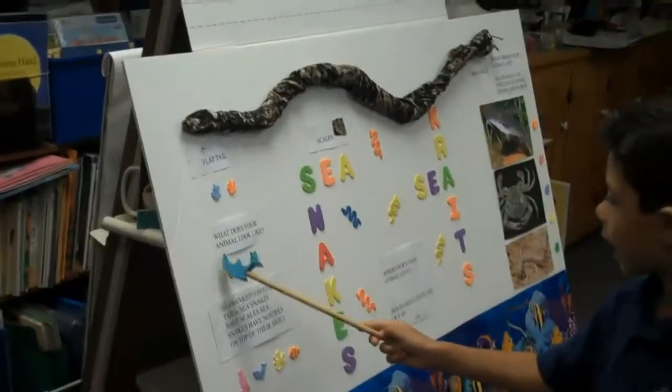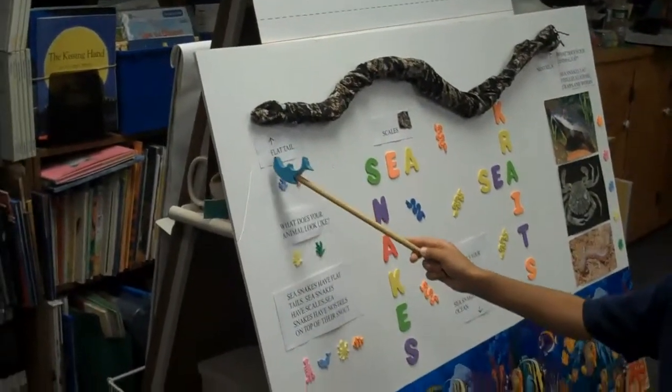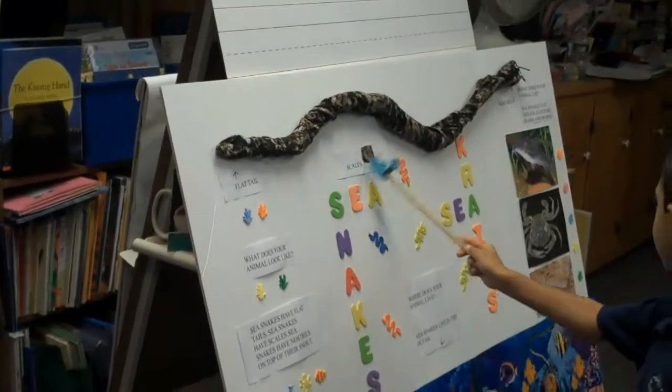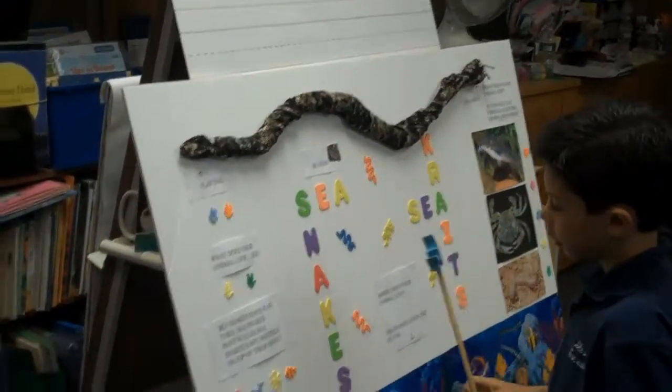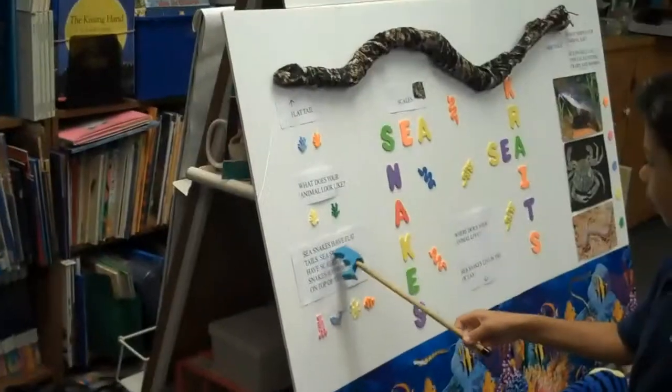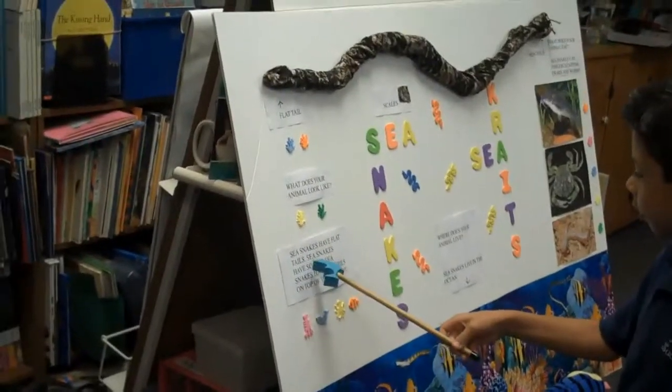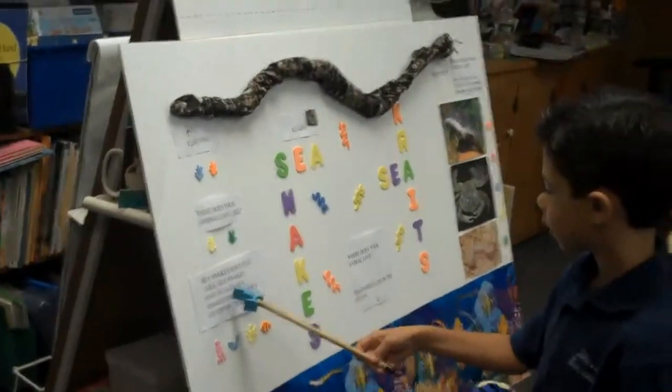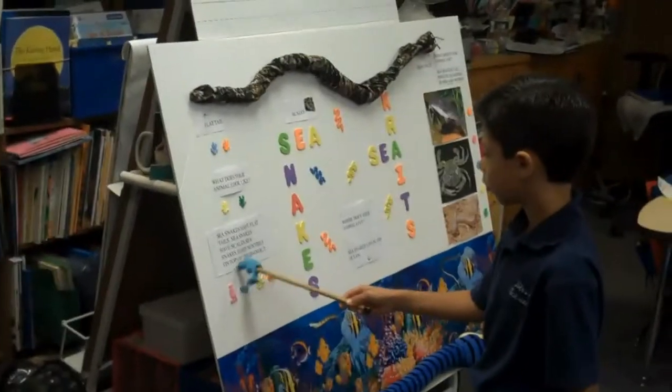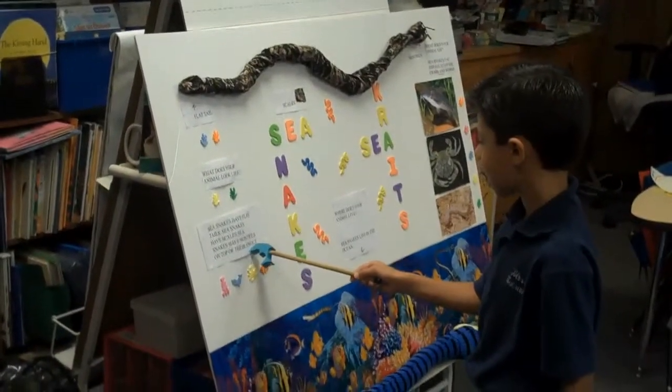What does your animal look like? Flat tail, scales, nostrils. Sea snakes have flat tails, sea snakes have scales, sea snakes have nostrils on top of their snouts.